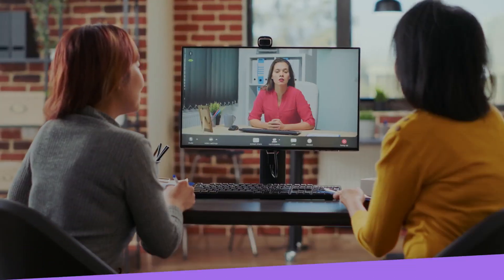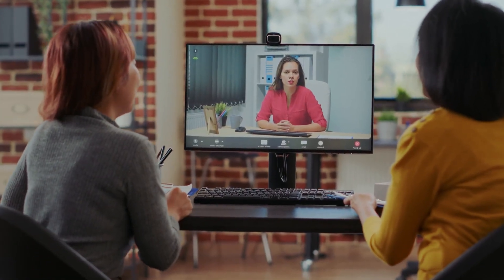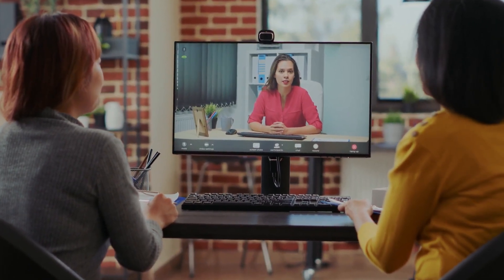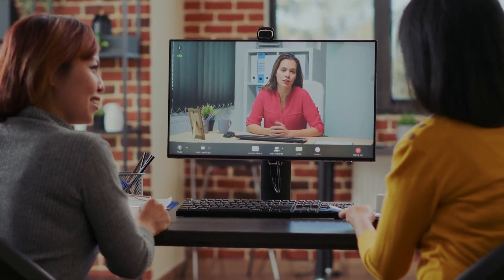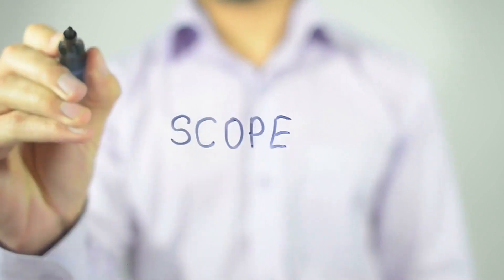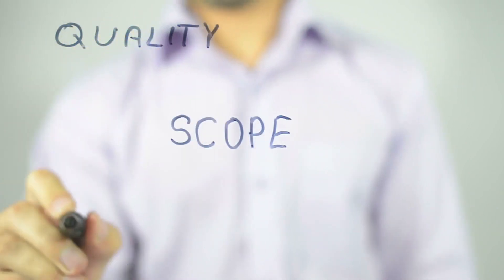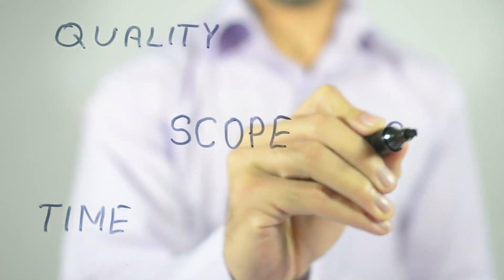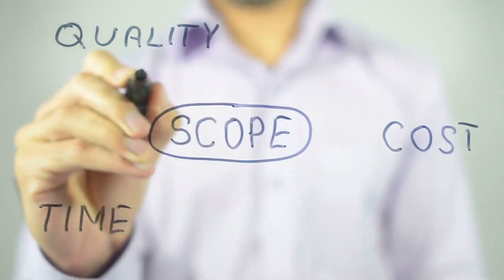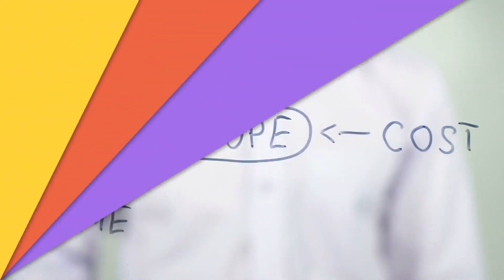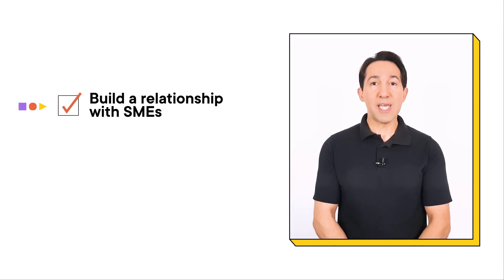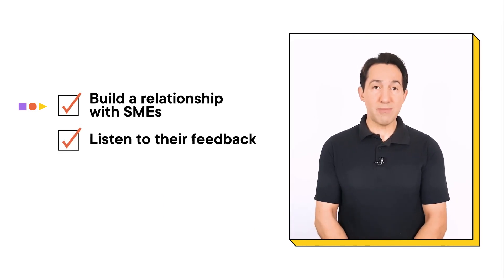Interviewing SMEs is another important aspect of effective microlearning video scripting. When interviewing SMEs, it's important to be respectful of their time and come prepared with a list of questions and topics to cover. Establish clear expectations about the scope and purpose of the content, and make sure that the SMEs have a clear understanding of their role in the process. In addition, it's important to build a good working relationship with the SMEs and to listen to their input and feedback.